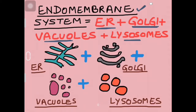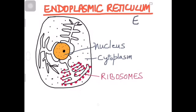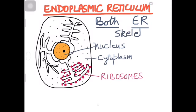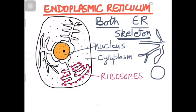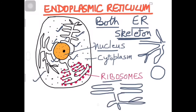ER, that means endoplasmic reticulum, is found in both plant as well as animal cells. It forms a sort of skeleton of the cell, found throughout the whole cell. It is made of a whole network of tube-like structures — tubules, pipes, and cisternae.